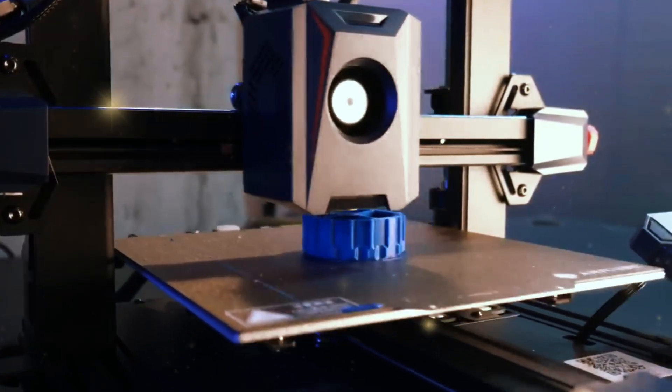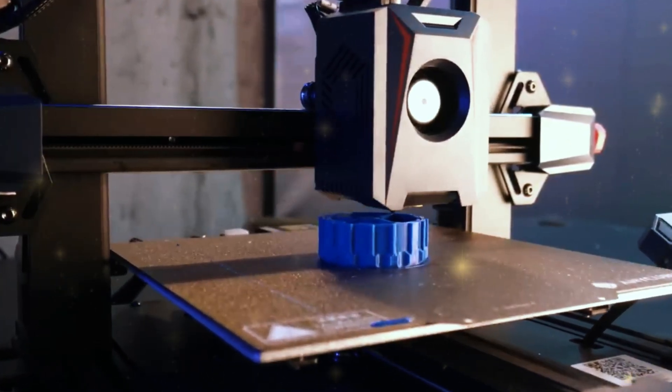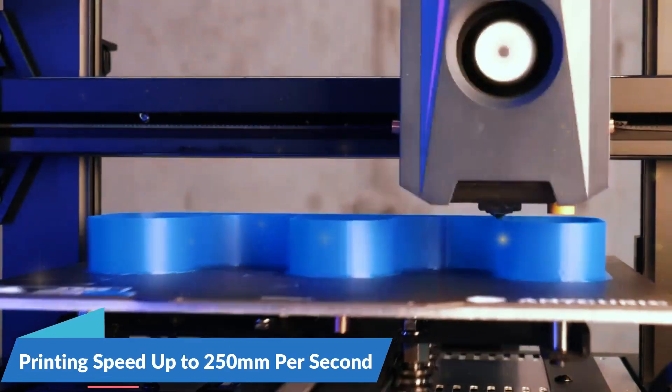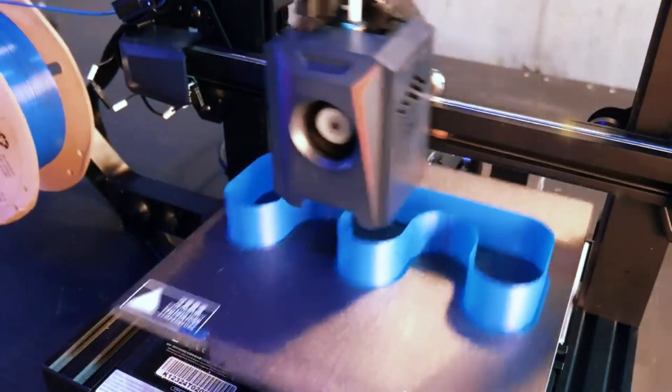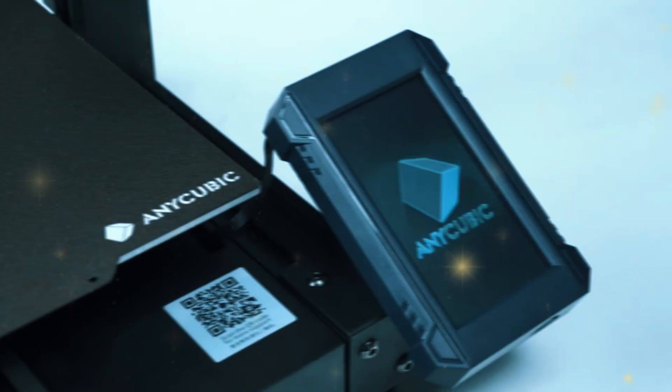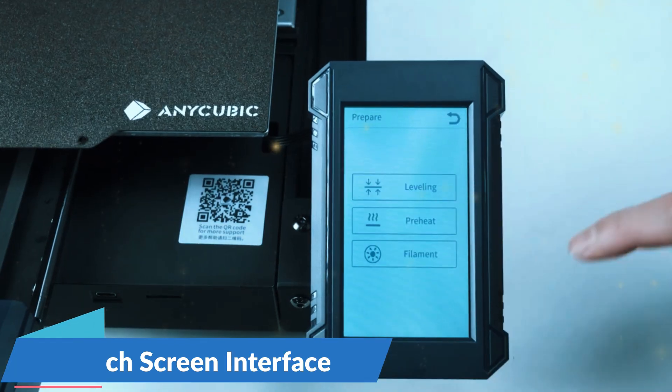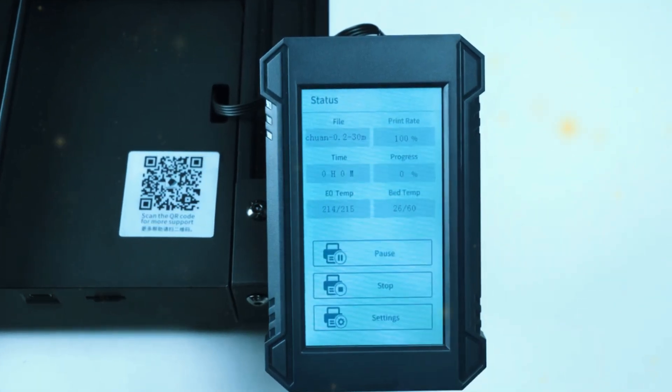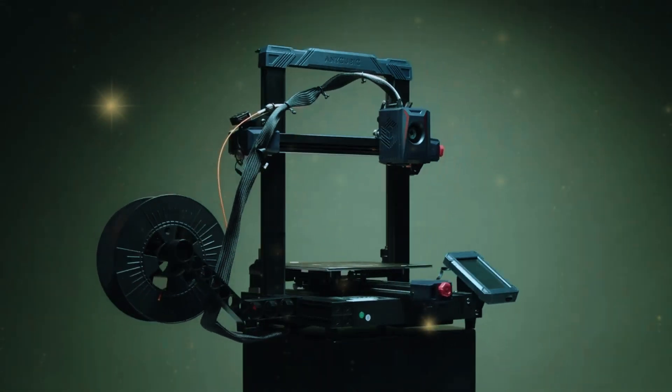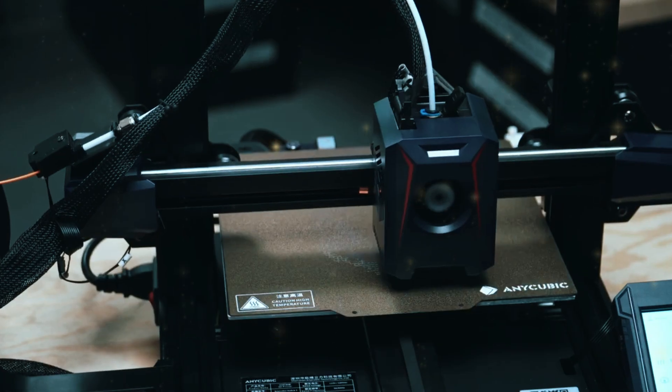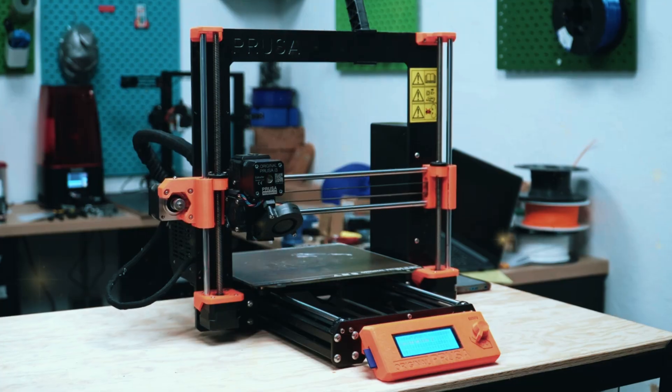What really sets the Anycubic Cobra 2 apart is its impressive printing speed. With the ability to reach speeds of up to 250 mm per second, this printer allows you to complete your projects quickly without compromising on detail. The touchscreen interface is intuitive and easy to use, giving you full control over your prints with just a few taps. For those who are looking for a reliable, feature-packed 3D printer at an affordable price, the Anycubic Cobra 2 is definitely worth considering.